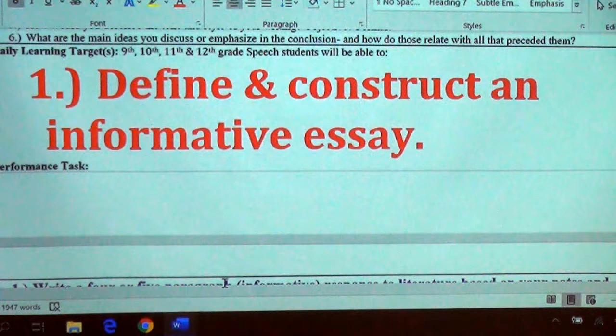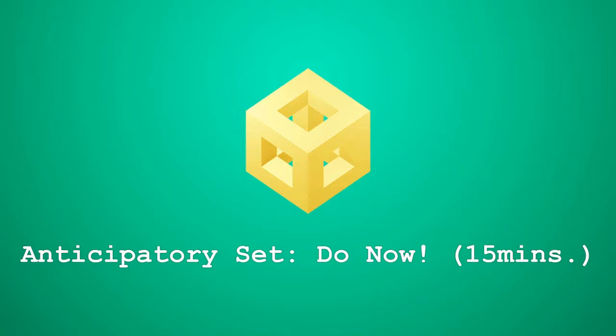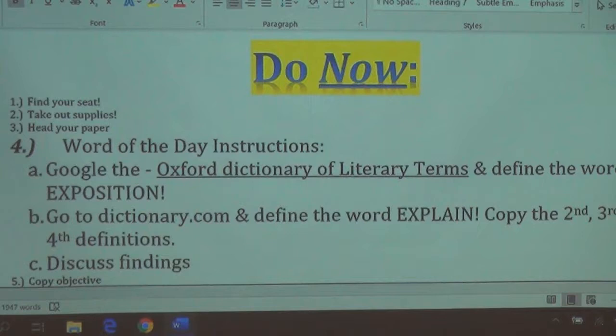After your title line, drop down and write your objective. Every time we start a new lesson, you should have an objective written in red — this is what I expect you to learn by the end of the lesson. Go to Google and search the Oxford Dictionary of Literary Terms, where you're going to define the word 'exposition.'